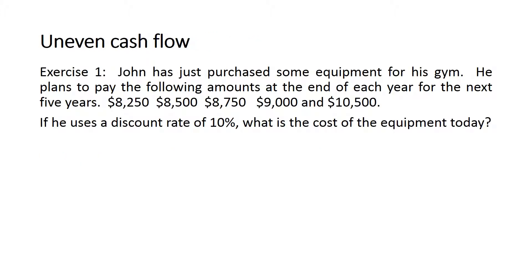Let us look at exercise one. It says John has just purchased some equipment for his gym. He plans to pay the following amounts at the end of each year for the next five years: 8,250; 8,500; 8,750; 9,000; and 10,500.